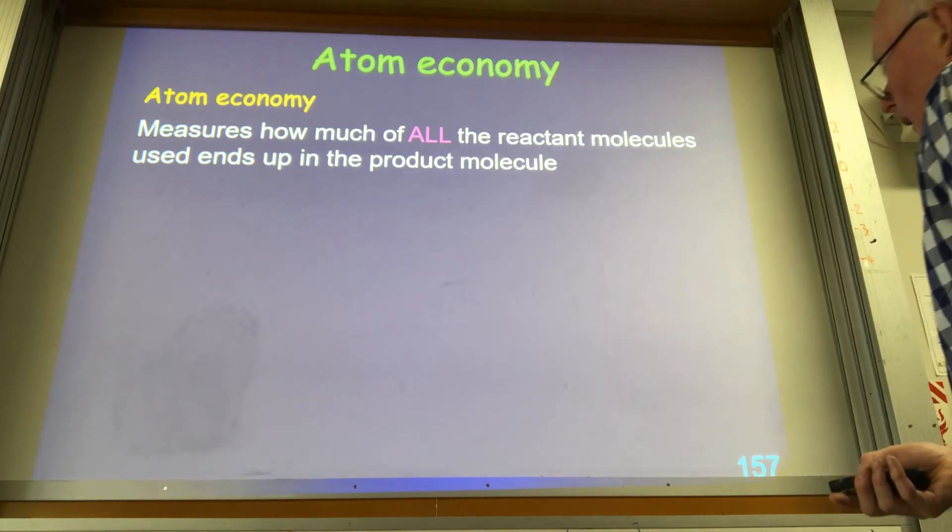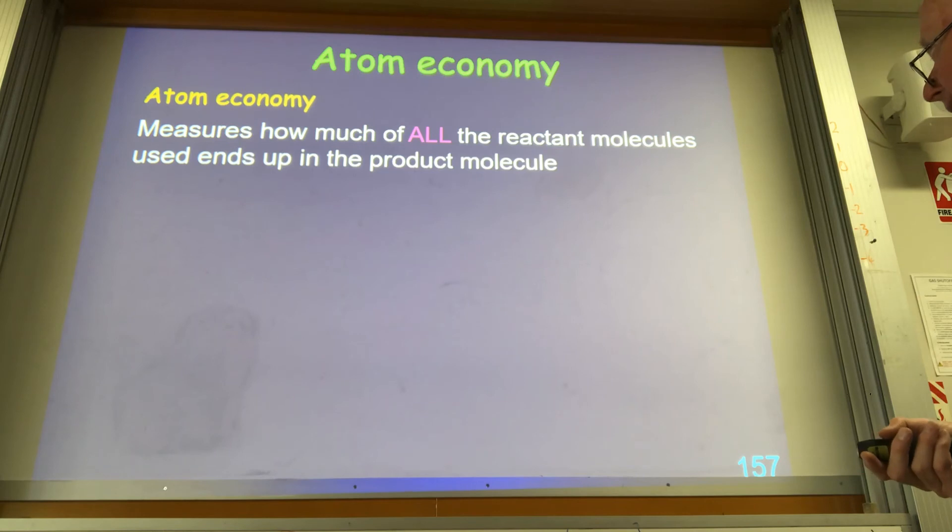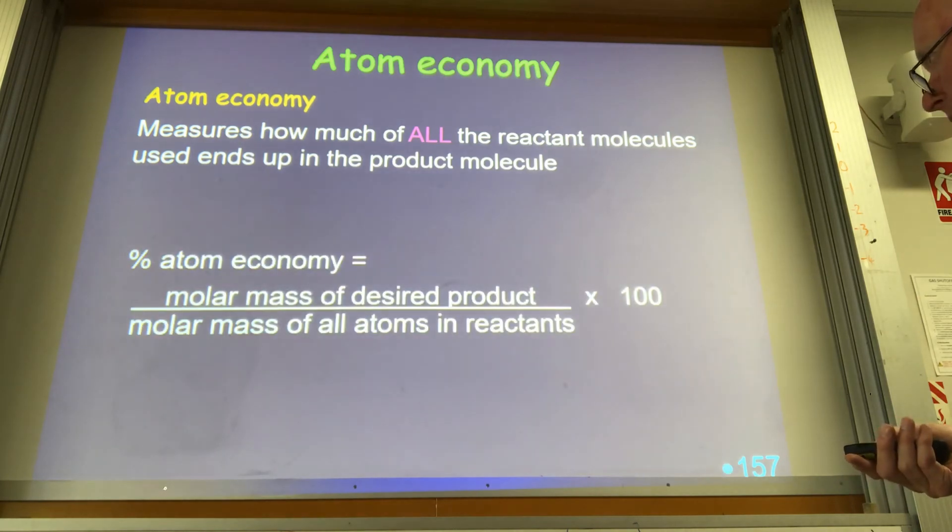So the more steps, the more reactants you've got, the less of it ends up in the product, the lower atom economy you've got. So molar mass of the desired product - the stuff that you're making at the end of the day - divided by the molar mass of all the atoms in all the reactants that are going to make it.